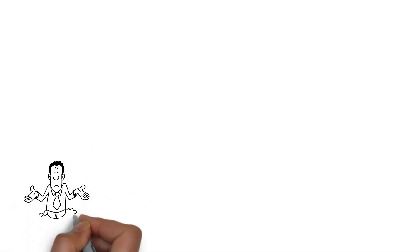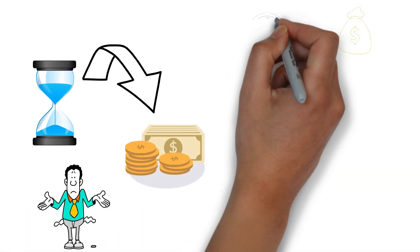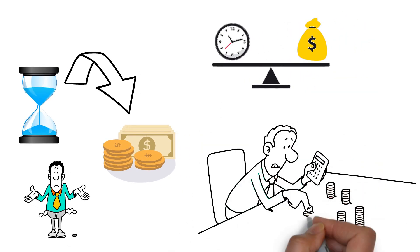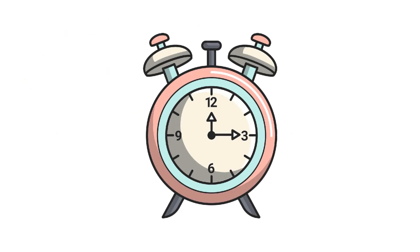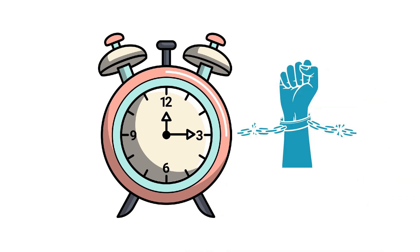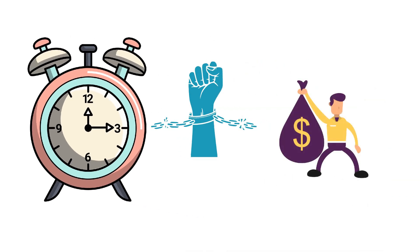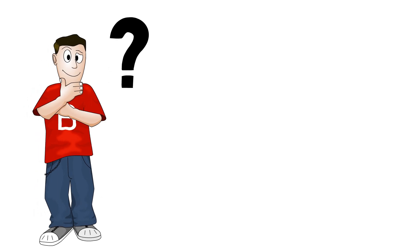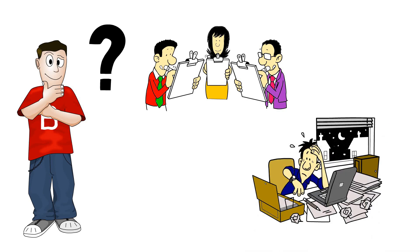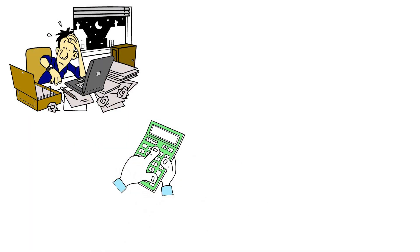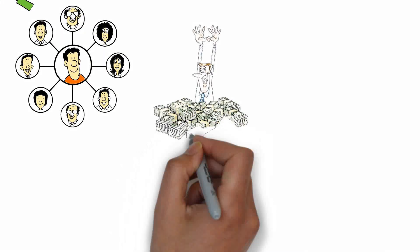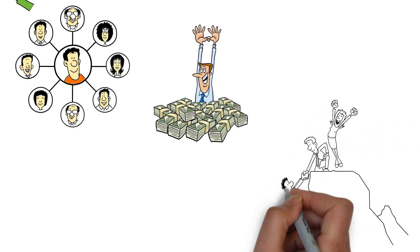So how you manage your time can make a significant difference in your wealth-building journey. The first mistake many people make is trading time for money directly, like working for an hourly wage. The problem with this approach is that it inherently limits your earning potential, as there are only so many hours in a day. But the rich understand that you need to break free from this constraint to truly build wealth.